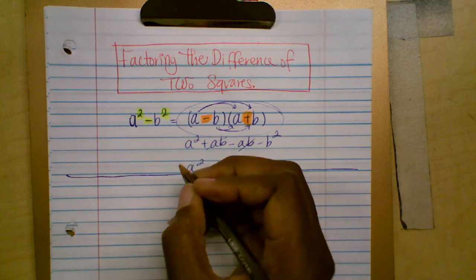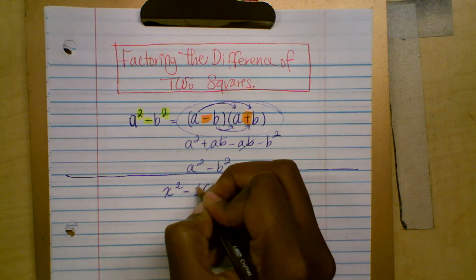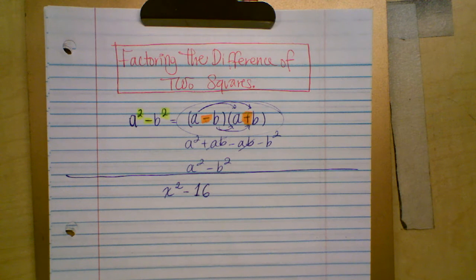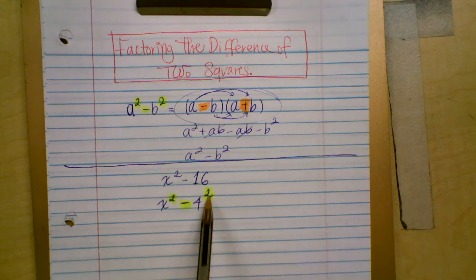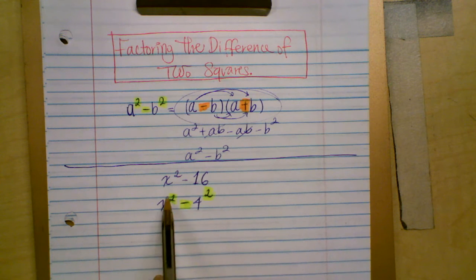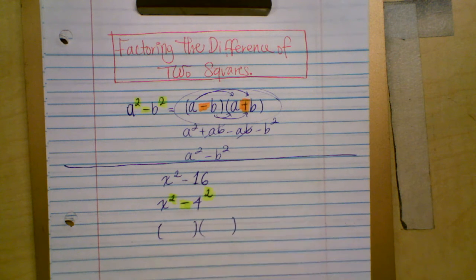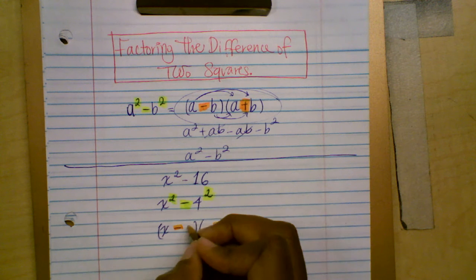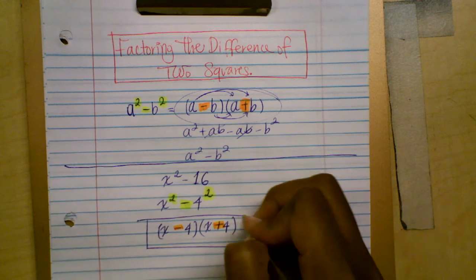Let's try to factor this quadratic expression: X squared minus 16. You can write both terms as squares — four squared is 16 — so now you have a difference of two squares. Write two empty factors: one with minus and one with plus. Drop the square on each term and write X and four inside each factor. So the answer is (X minus 4)(X plus 4).